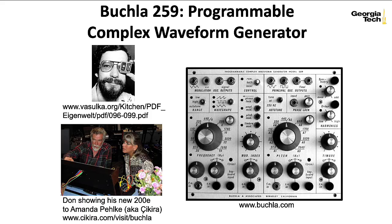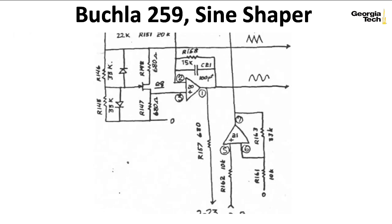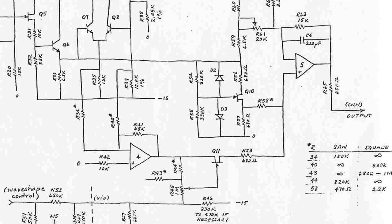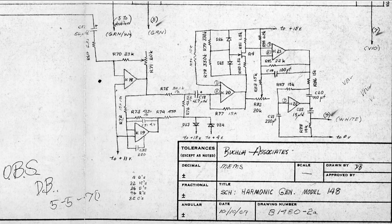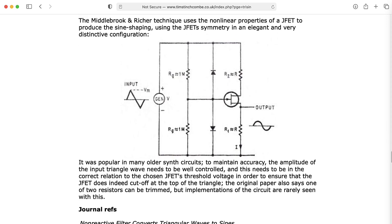The final triangle-to-sine wave shaper I want to show you was a favorite of Don Buchla. Here's the main triangle core from the Buchla 259 — it creates a triangle wave, and then this little circuit takes a triangle wave in and gives you a sine wave out. You have a couple of resistors on either side of a JFET — here it's an NFET — and a couple of diodes. This configuration is used in Buchla's earlier oscillators like the 258 and the Music Easel, and in the much older 148 harmonic generator. And for reference, this circuit didn't originate with Buchla — it showed up in a paper sometime earlier.